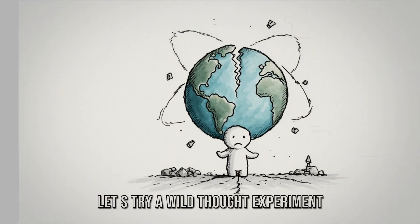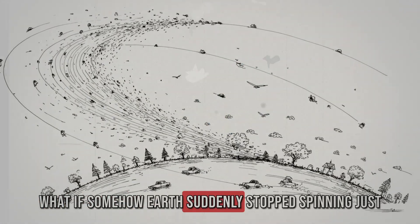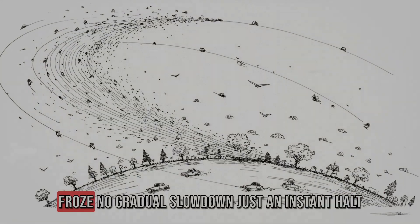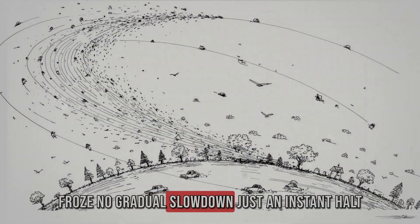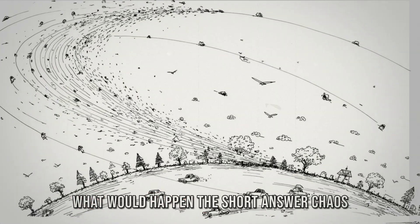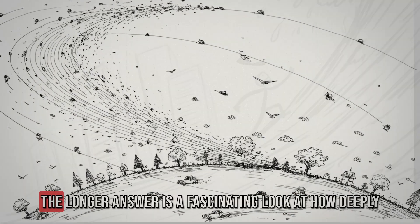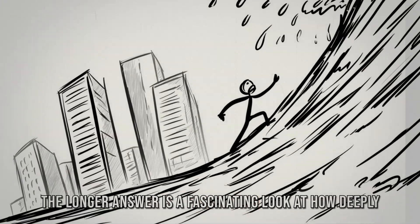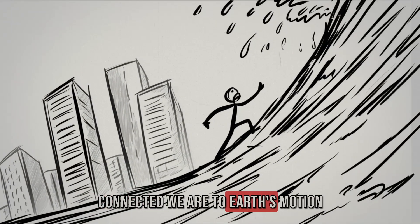Let's try a wild thought experiment. What if, somehow, Earth suddenly stopped spinning, just froze? No gradual slowdown, just an instant halt. What would happen? The short answer? Chaos. The longer answer is a fascinating look at how deeply connected we are to Earth's motion.